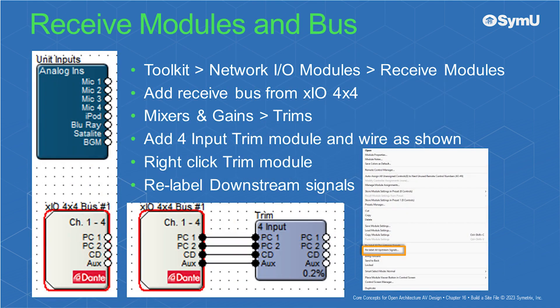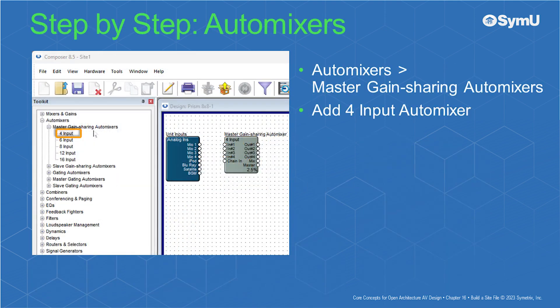In toolkit under Network I/O modules, receive modules, add the receive bus from the XIO 4x4. Under mixers and gains, trims, add a four-input trim module and wire it as shown. Right-click on the trim module and select relabel all downstream signals. Next, under automixers, master gain sharing automixers, add a four-input automixer. Under the dynamics AGCs, add two dual mono AGC modules. Wire the automixer and AGC modules as shown.